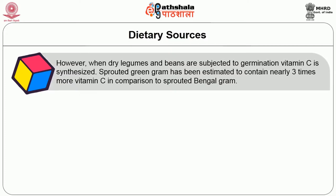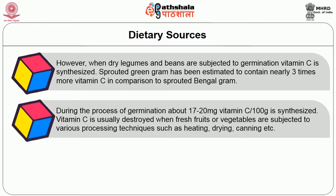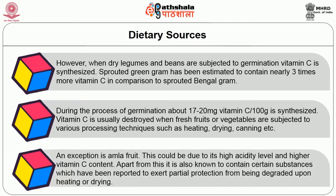However, when dry legumes and beans are subjected to germination, vitamin C is synthesized. Sprouted green gram has been estimated to contain nearly three times more vitamin C in comparison to sprouted Bengal gram. During the process of germination, about 17-20 mg of vitamin C per 100 grams is synthesized. Vitamin C is usually destroyed when fresh fruits or vegetables are subjected to various processing techniques such as heating, drying, canning, etc. An exception is the amla fruit, which could be due to its high acidity level and higher vitamin C content, as well as certain substances that exert partial protection from degradation upon heating or drying.